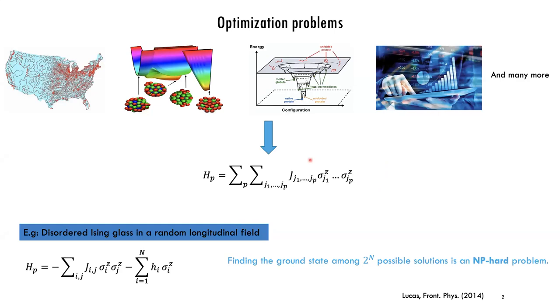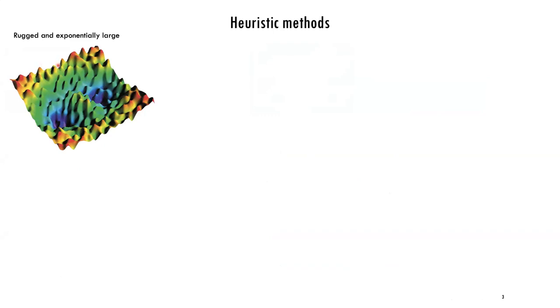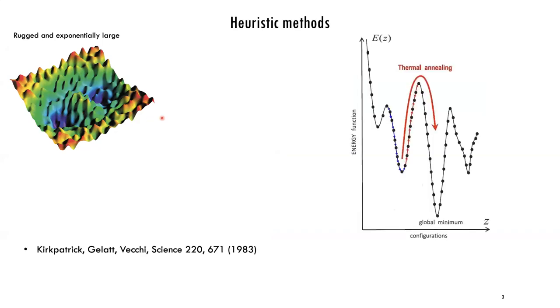They use heuristic methods to do that. It is sometimes advantageous to view this classical energy as an energy functional over spin configurations. For hard problems, this energy landscape is very rugged, exponentially large, with many local minima. What heuristic methods do is perform a search in that landscape — instead of finding the deepest valley, they find solutions not far from the deepest valley.